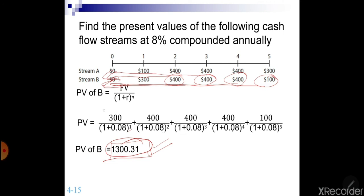Whereas, if this cash flow is related to expenses, you would prefer the one that has the lower present value in that case. So if this is an income, you would prefer stream B.